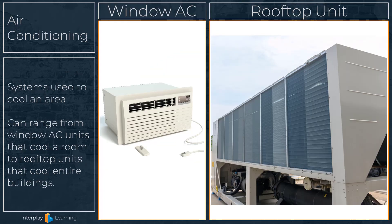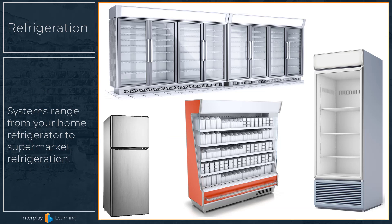There are many different kinds of air conditioning systems. The size of these systems depends on what type of space needs to be cooled. They can range from a window AC unit that cools a room in your house to rooftop units that cool entire buildings. Air conditioning and refrigeration systems use refrigerant to keep things cool. Refrigeration systems can range from your home refrigerator to supermarket refrigeration.